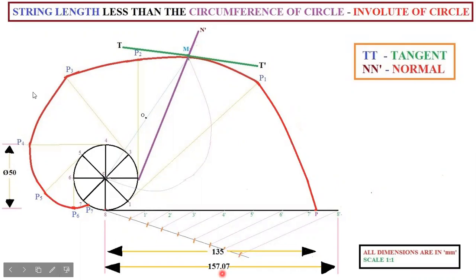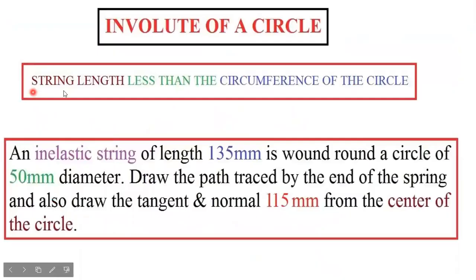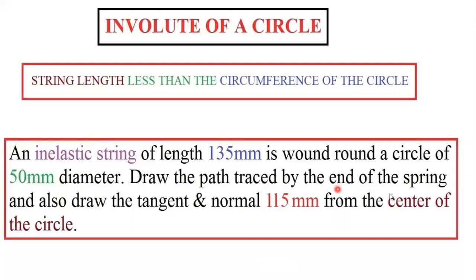The question condition is: string length less than circumference of the circle. An inelastic string of length 135 mm is bound round a circle of 50 mm diameter. Draw the path traced by the end of the string, and also draw the tangent and normal 115 mm from the center of the circle.